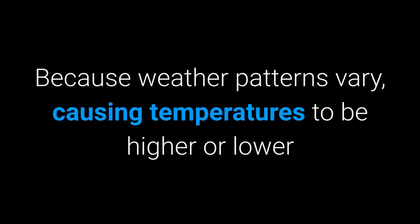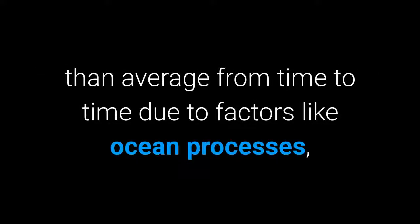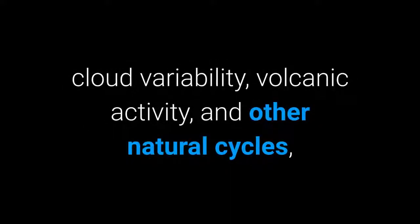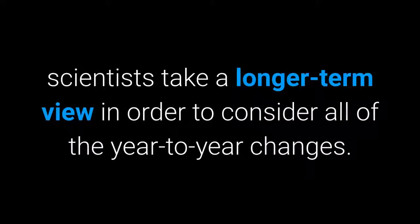8. Global Average Temperature. Global average temperature is a long-term look at the Earth's temperature, usually over the course of 30 years, on land and sea. Because weather patterns vary, causing temperatures to be higher or lower than average from time to time due to factors like ocean processes, cloud variability, volcanic activity, and other natural cycles, scientists take a longer-term view in order to consider all of the year-to-year changes.